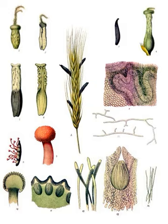Ergot infection causes a reduction in the yield and quality of grain and hay, and if livestock eat infected grain or hay it may cause a disease called ergotism. Black and protruding sclerotia of C. purpurea are well known. However, many tropical ergots have brown or grayish sclerotia, mimicking the shape of the host seed, so the infection is often overlooked. Insects, including flies and moths, carry conidia of Claviceps species, but it is unknown whether insects play a role in spreading the fungus from infected to healthy plants.